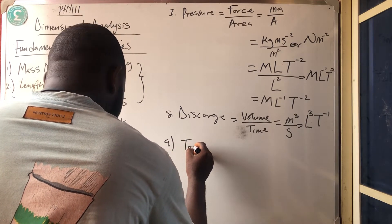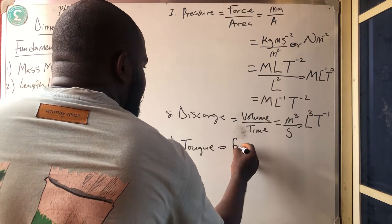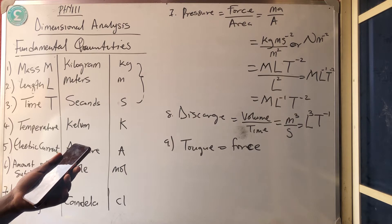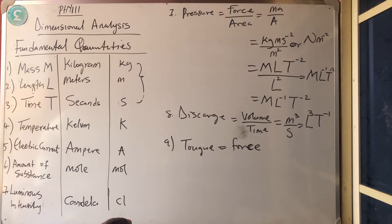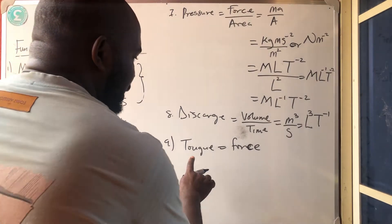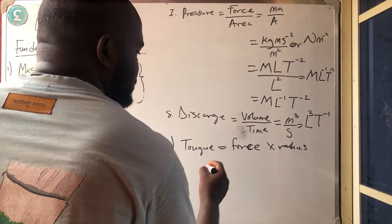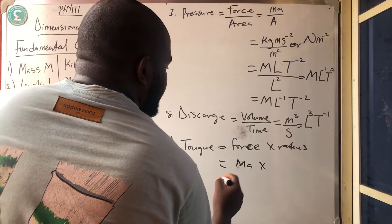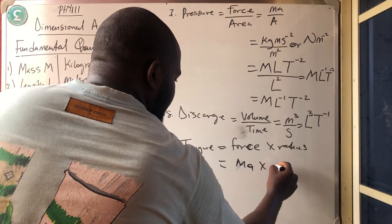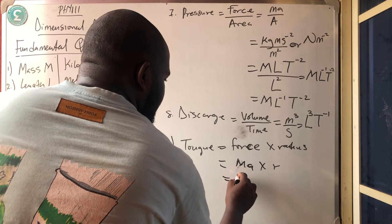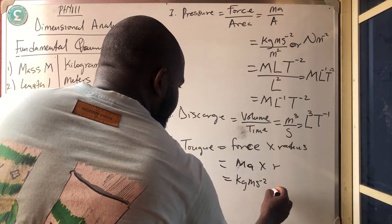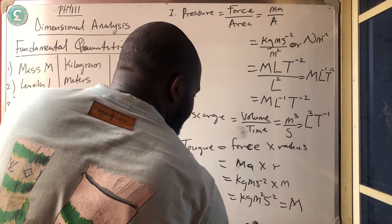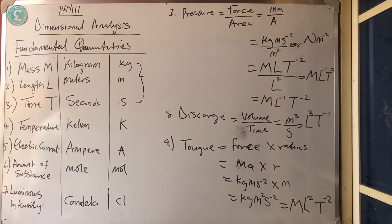Number 9 is torque. Torque is the same thing as force acting on a particular area, always in a circular form. Torque equals force times radius. Force is MA, and radius is measured in meters. So we have kilogram times meter per second square times another meter, giving kilogram meter squared per second square. The dimension is ML²T⁻².